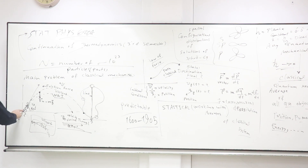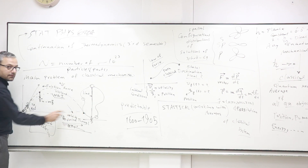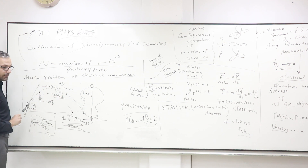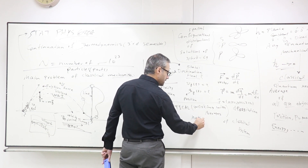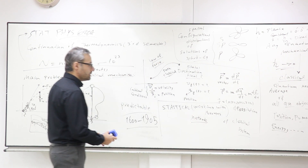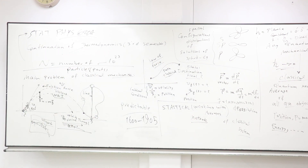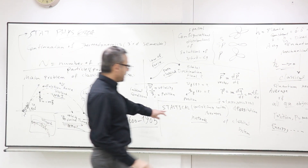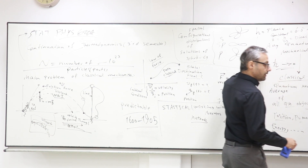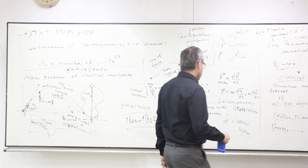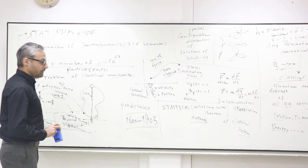If you wanted to shoot a thousand balls in different positions with different velocities, it would be a completely complicated problem. You need statistical methods — you need averaging. This is classical statistical mechanics. Because any classical system has quantum mechanical limits, we can also talk about statistical quantum systems.